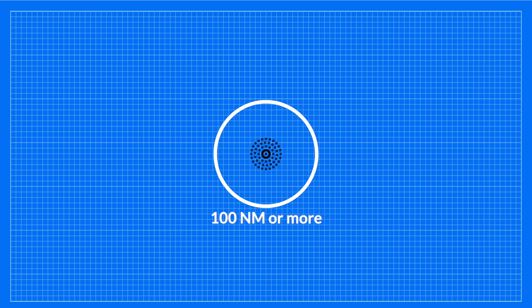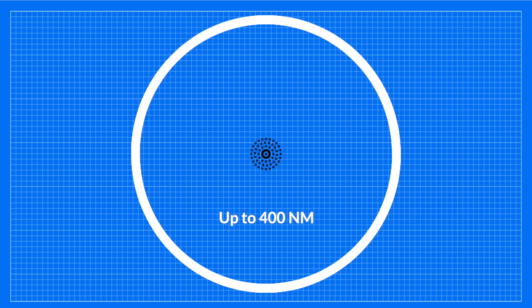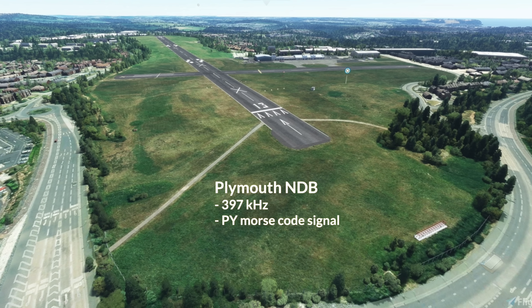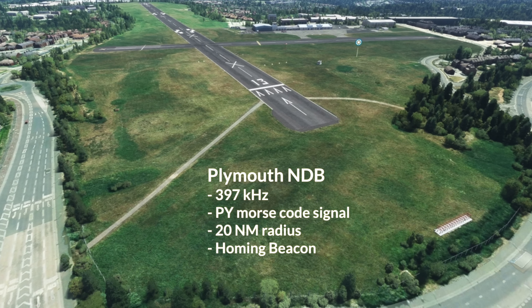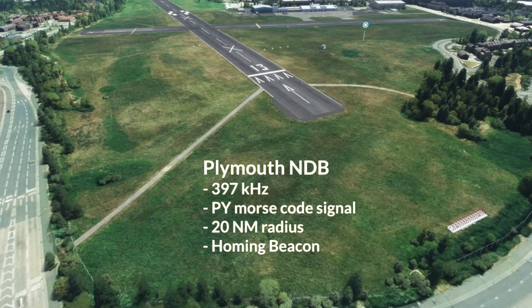What is the range of a non-directional beacon? If you are flying long range, you will need a fairly strong NDB with a range of 100 nautical miles or more. For even longer cross-water flying, you will need an even more powerful NDB — for example, some beacons in the Pacific area can have a range of up to 400 nautical miles. On the other hand, if you're flying a shorter route within the UK, where there are many navigation facilities, most NDBs have a much shorter range. The Plymouth NDB, for instance, has just a 20 nautical mile radius, basically acting as a homing beacon situated right next to the runways of Plymouth Airport.